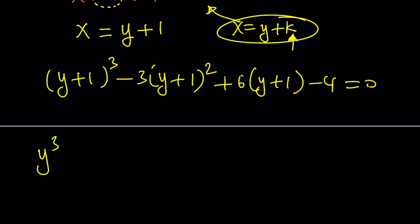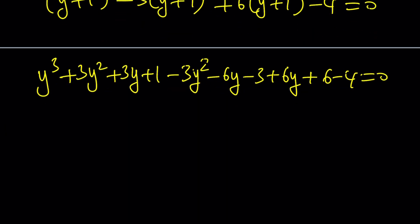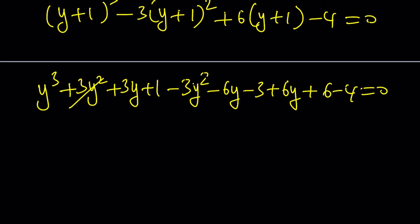Now we're going to go ahead and expand it. If you go ahead and distribute the negative 3. Alright, let's see. Now 3y squared cancels out. These two terms cancel out. We end up with y cubed plus 3y. Let's go ahead and combine the constants. 1 minus 3 is negative 2. Negative 2 plus 6 is 4. 4 minus 4 is equal to 0. Wow. This gave us a real simple equation, didn't it?